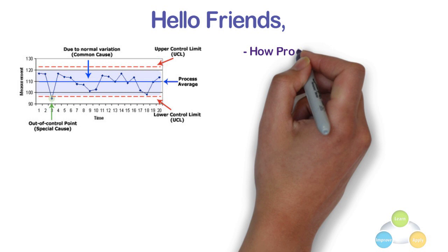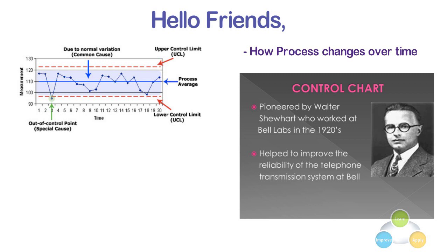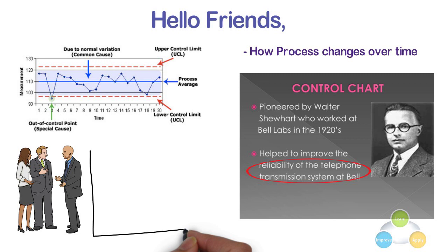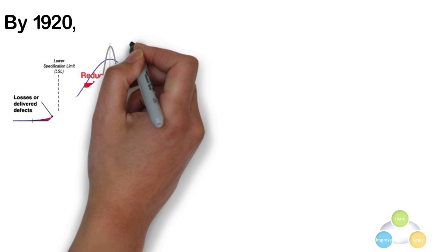The control chart was invented by Walter E. Shewhart while working for the Bell Labs in the 1920s. The company's engineers had been seeking to improve the reliability of their telephony transmission systems. Because amplifiers and other equipment had to be buried underground, there was a stronger business need to reduce the frequency of failures and repairs. By 1920, the engineers had already realized the importance of reducing variation in manufacturing processes.